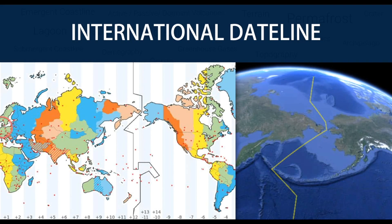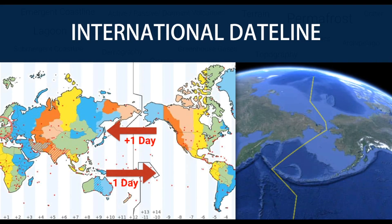The international date line functions as a line of demarcation separating two consecutive calendar dates. When you cross the date line, you become a time traveller of sorts — cross to the west and it's one day later; cross back and you've gone back in time. Despite its name, the international date line has no legal international status and countries are free to choose the dates that they observe. While the date line generally runs north to south from pole to pole, it zigzags around political borders such as eastern Russia and Alaska's Aleutian Islands.